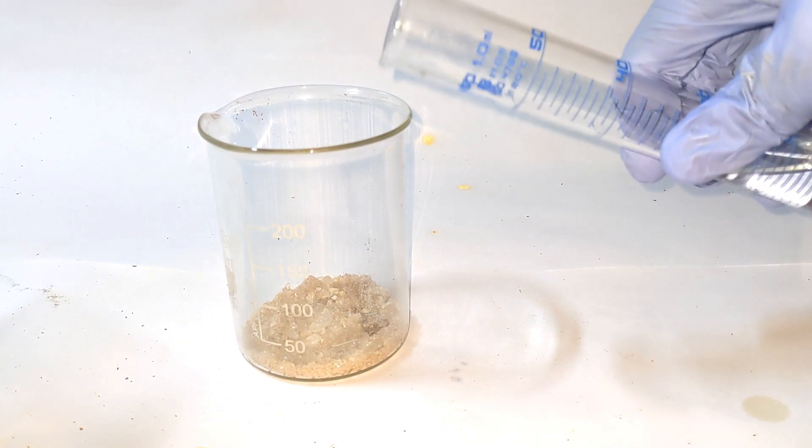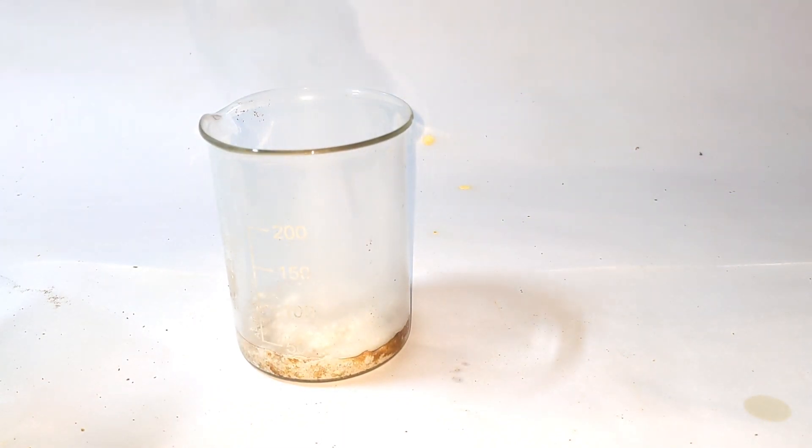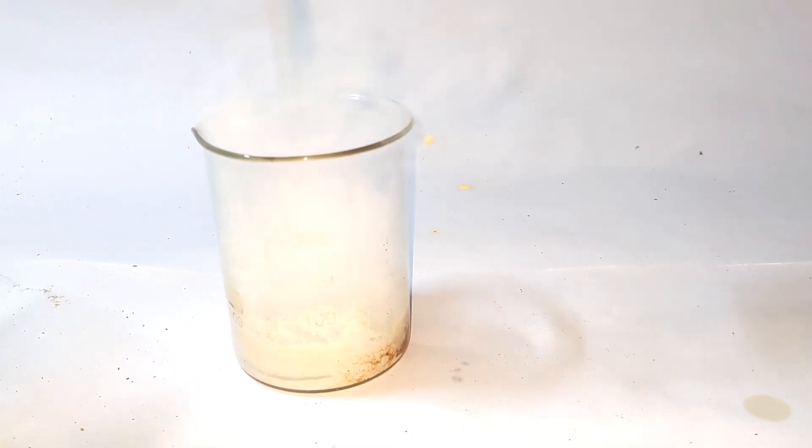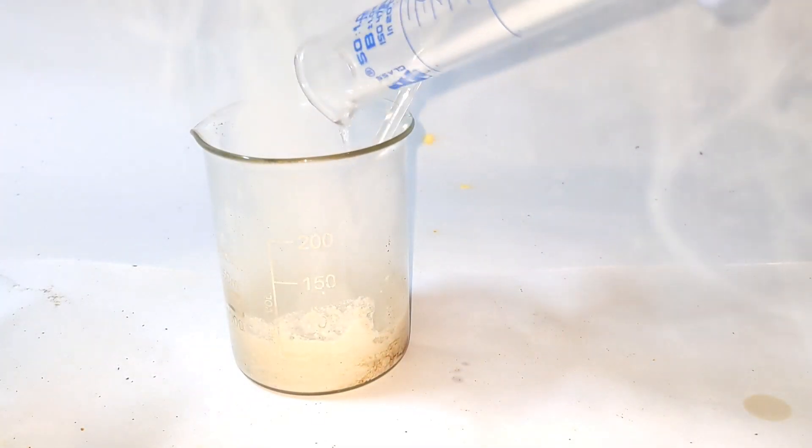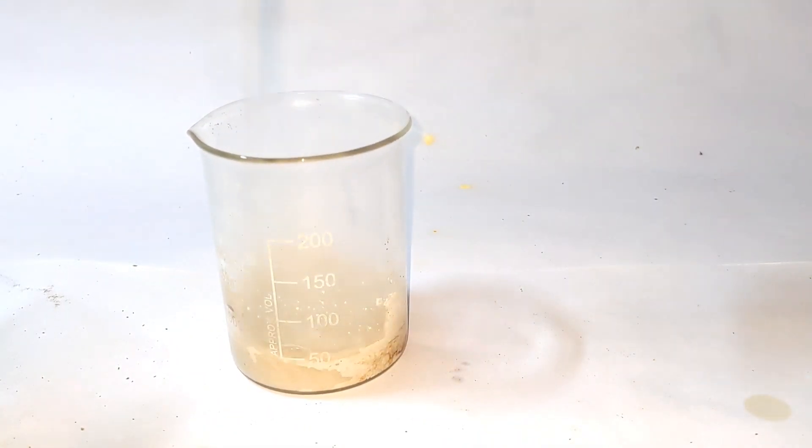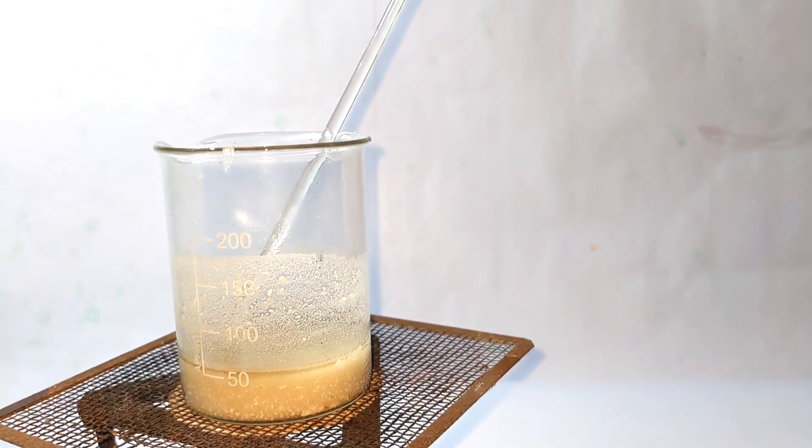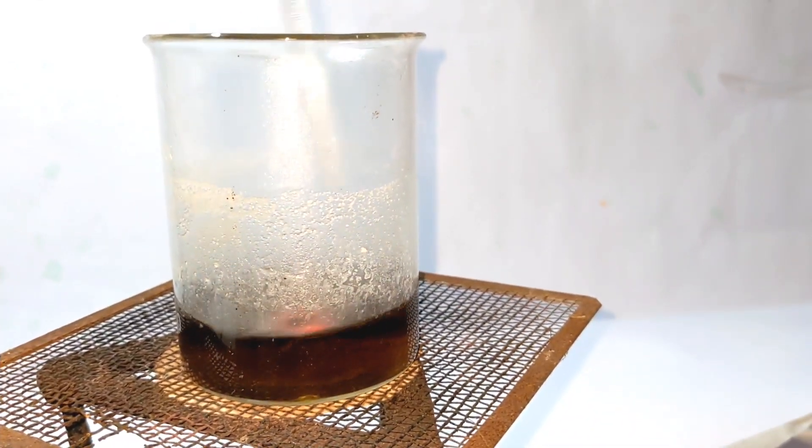12.5 grams of paratoluidine was taken in a 250 ml beaker and 20 ml of concentrated 36% hydrochloric acid was added to it. Just mix them together with a glass rod and then add 20 ml of distilled water. Everything was mixed to a uniform suspension. It was then heated on a tripod stand using a Bunsen burner.